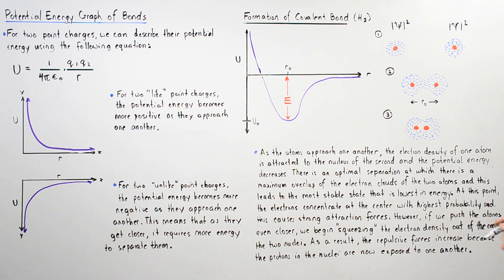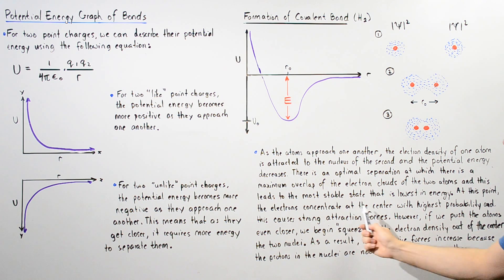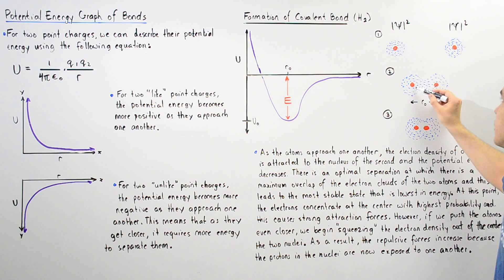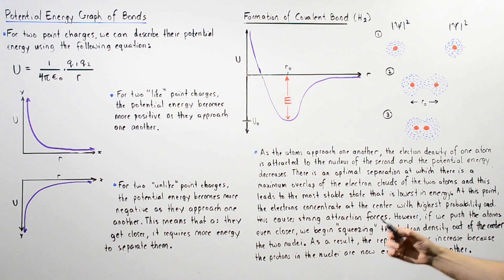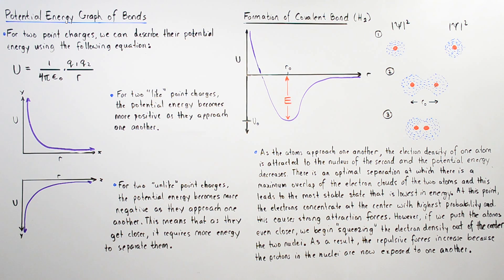If we continue pushing our atoms even closer, we begin squeezing the electron density out of the center, as shown in diagram 3. As we squeeze this electron density out of the center, these two protons in the two nuclei are now exposed to one another.